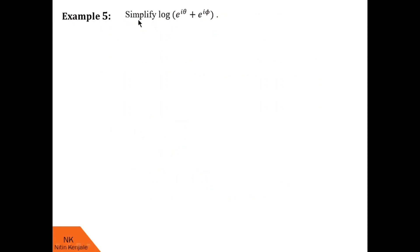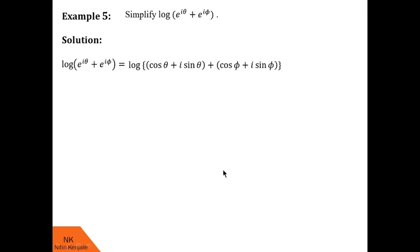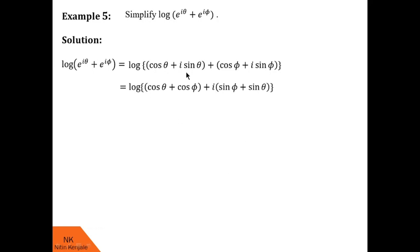Here we are asked to simplify log of e raised to i theta plus e raised to i phi. According to Euler's formula, e raised to i theta can be written as cos theta plus i sine theta, and e raised to i phi can be written as cos phi plus i sine phi. Now let us combine real parts together and imaginary parts together, so we get log of (cos theta plus cos phi) plus i(sine theta plus sine phi).